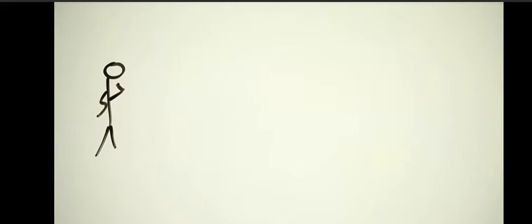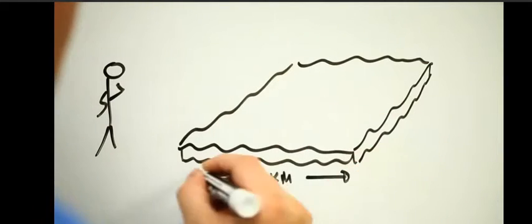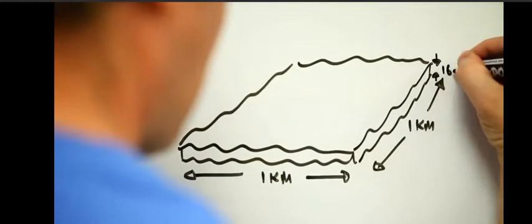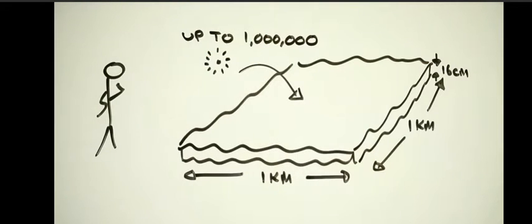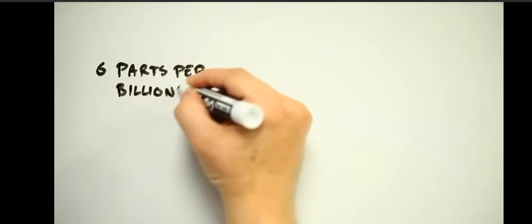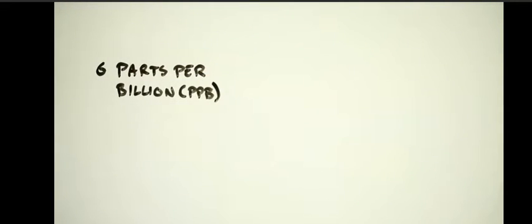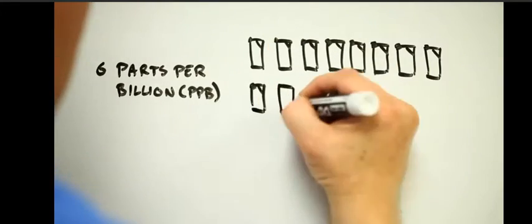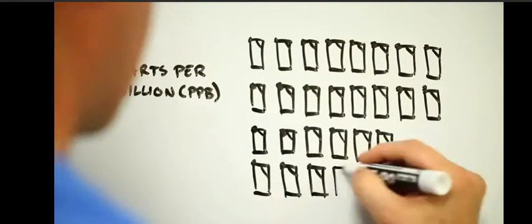Of course, how dangerous this is depends on how large the resulting exposures are. Professor Sherry Mason at the State University of New York at Fredonia is one scientist working on the problem. Sherry and her colleagues have measured up to a million microbeads per square kilometer at the surface of Lake Ontario. This is roughly equivalent to a polyethylene concentration of six parts per billion. This may not sound like a lot, and it wouldn't be if the plastic was the only problem.